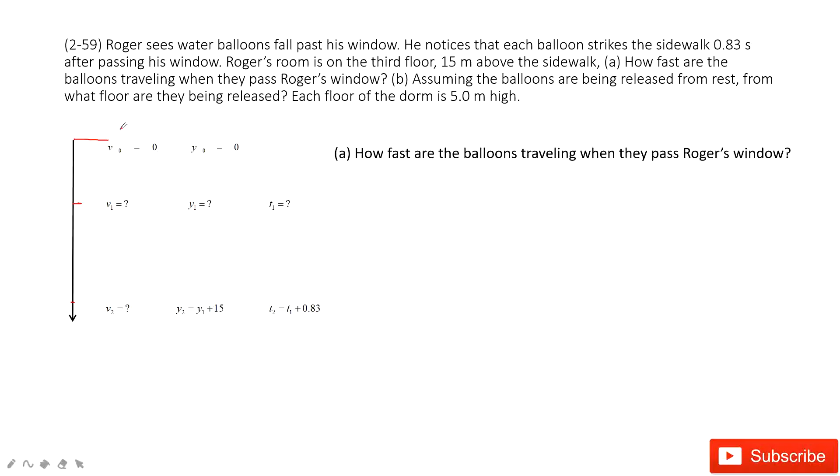Yes, there is a ball. When we release it, we consider this one as reference point. The initial velocity and initial position are zero. Then it falls to this position, the window. It gets velocity V1, position Y1, time T1. Then it hits the ground with velocity V2, position Y2, and time T2. There is a relationship between Y1 and Y2, T1 and T2. Does that clear to you?